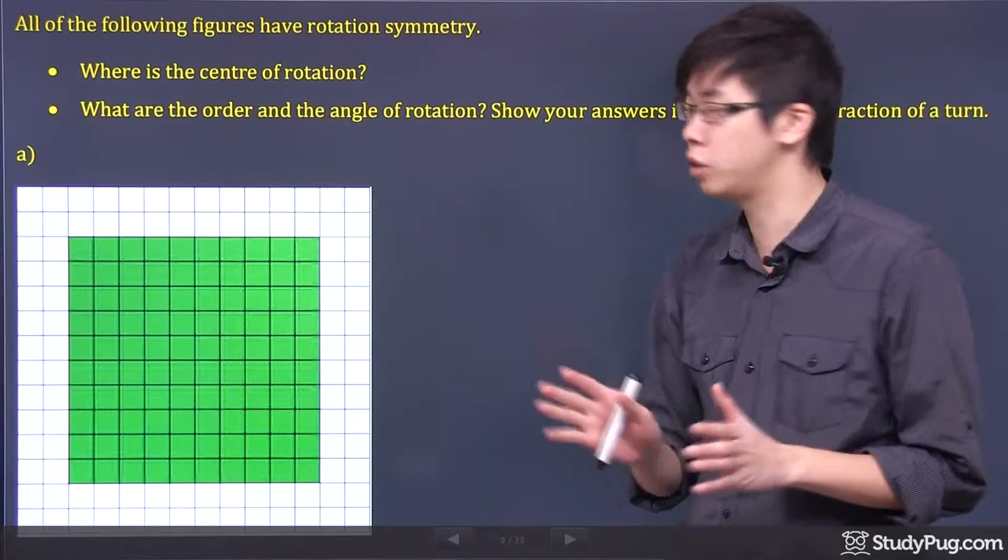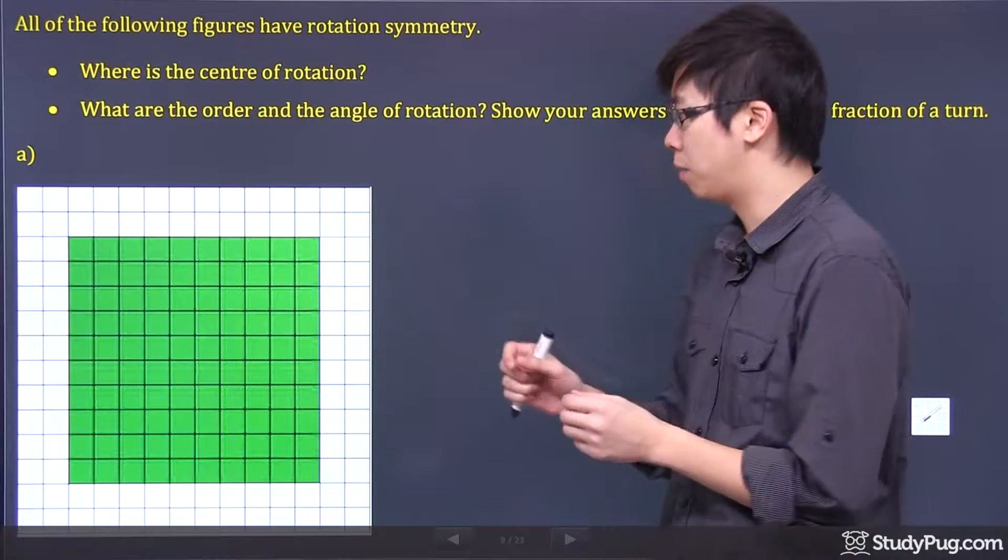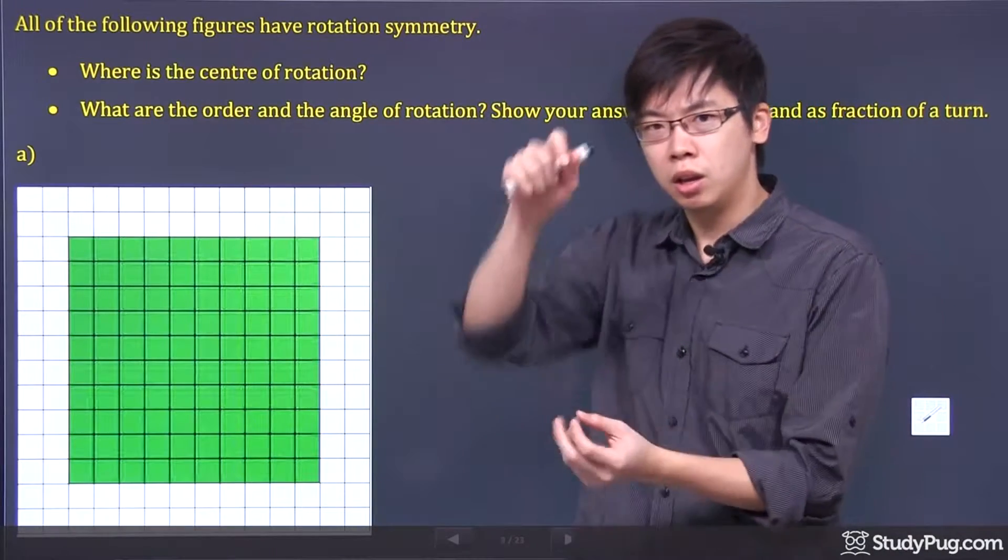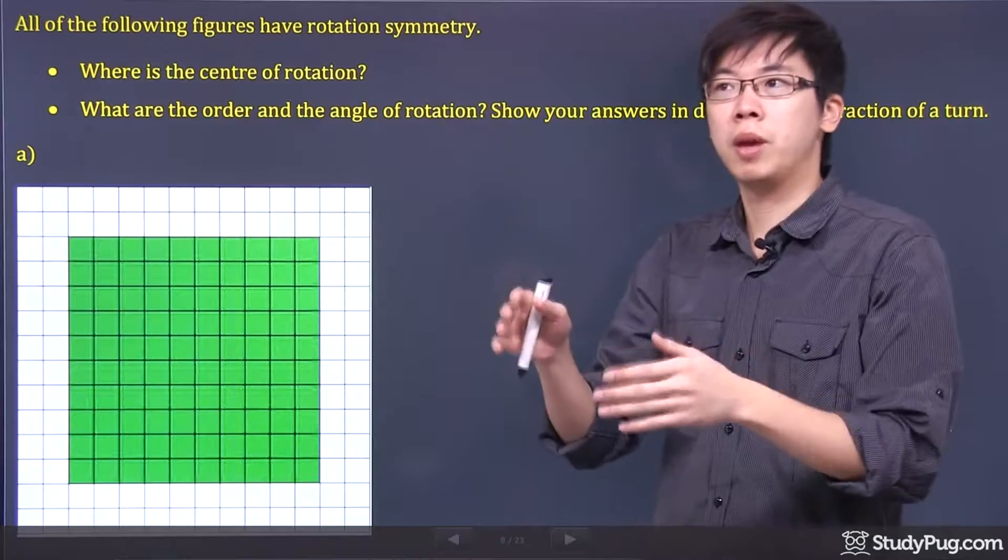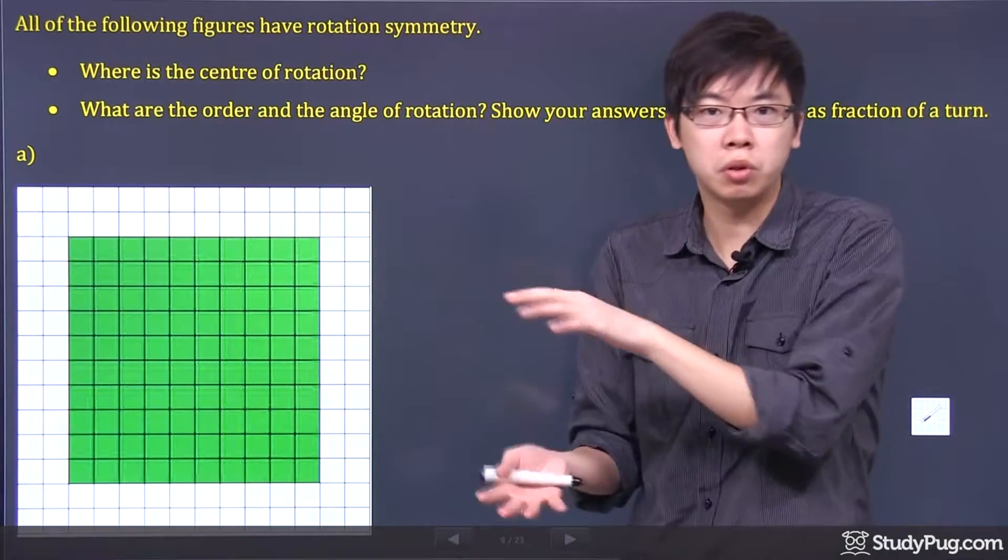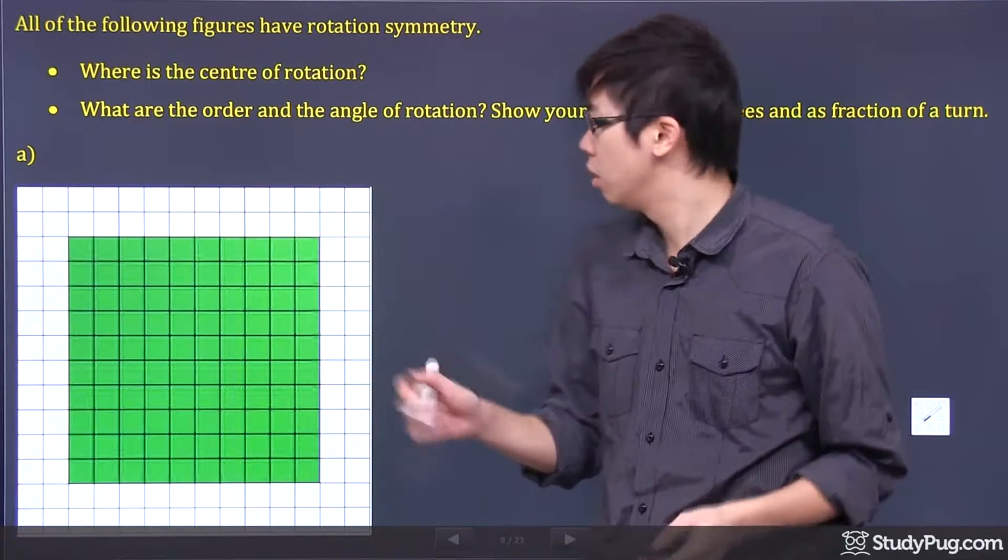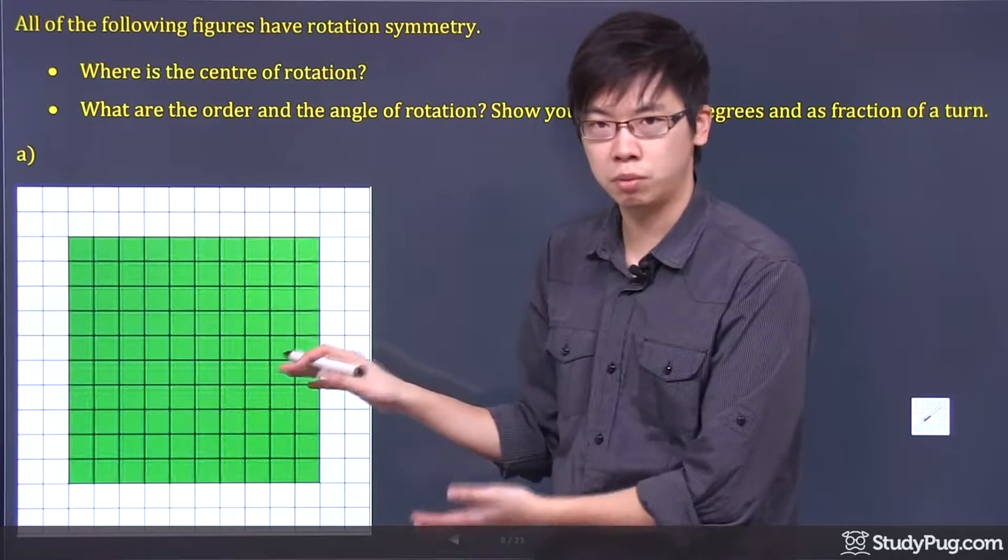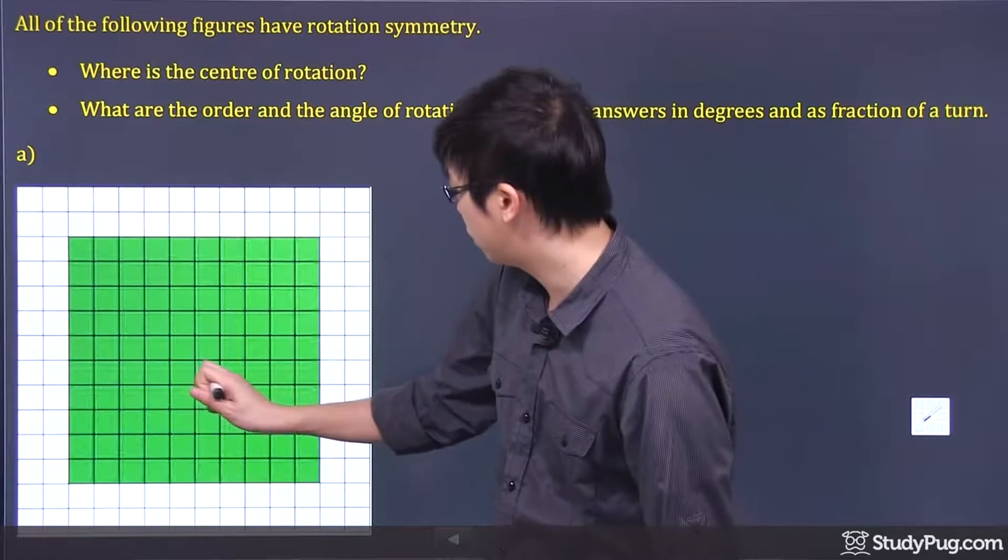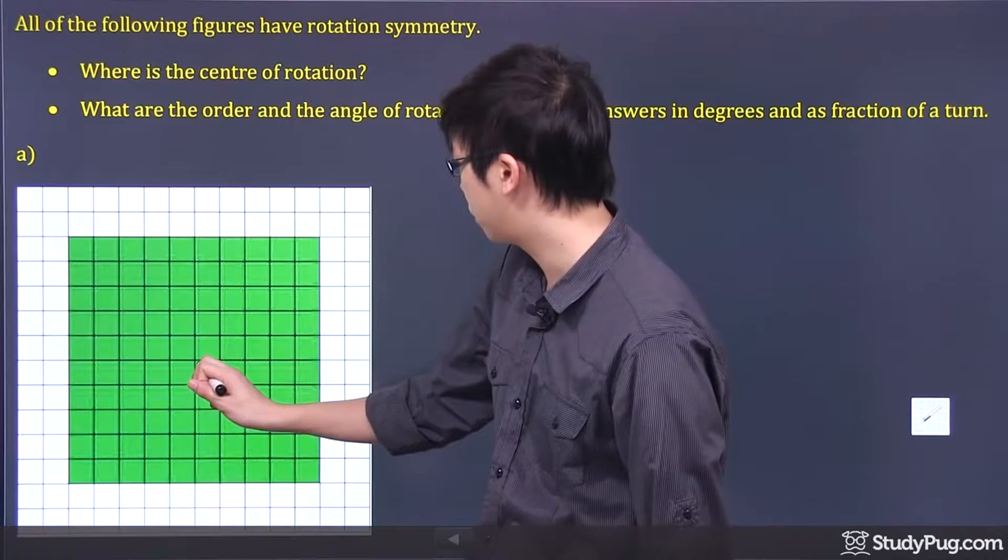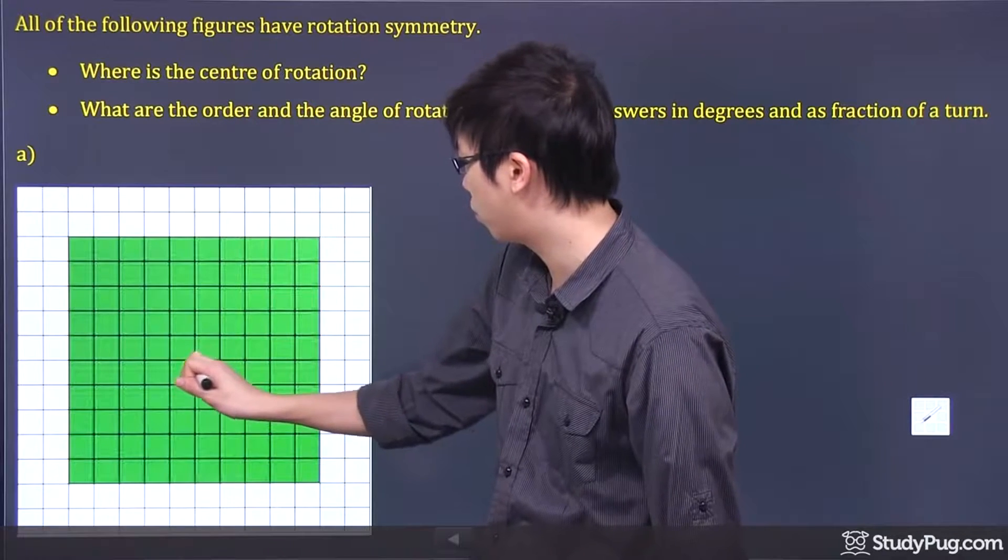Now, all you have to do is just pick the center of your image, and you have to know that this point, if you rotate it, it will form exactly the same image after you rotate it certain degrees. So for this figure right here, it's a rectangular shape, the green part, right? So the center of rotation will be this point right here.